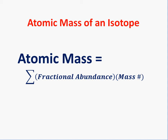How do we find the average mass of an element? Each isotope will have its own abundance, its own proportion. To find the atomic mass, we simply multiply the fractional abundance with its mass number, add all those products together, and that gives us the average atomic mass. Now let's solve some problems to understand it better.